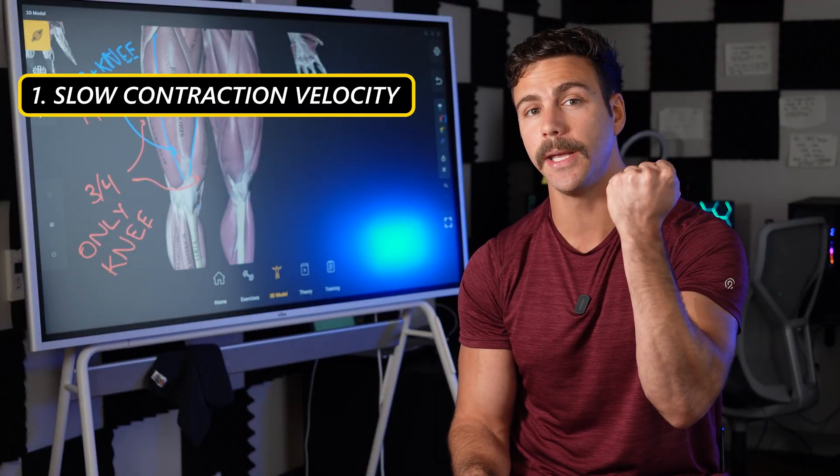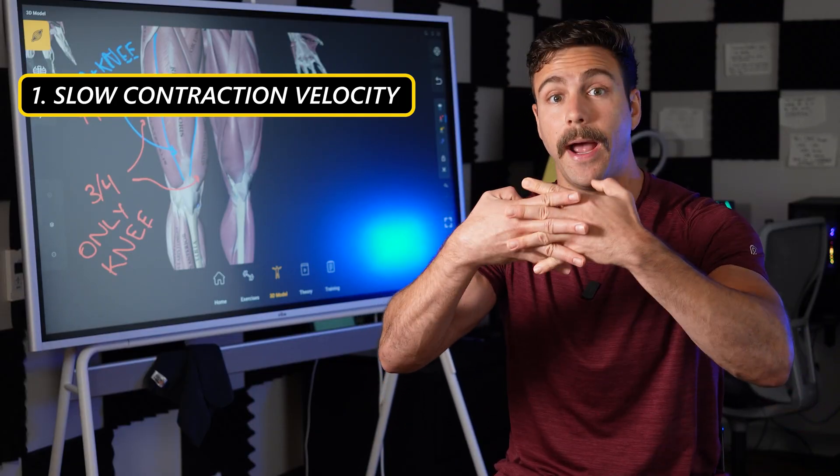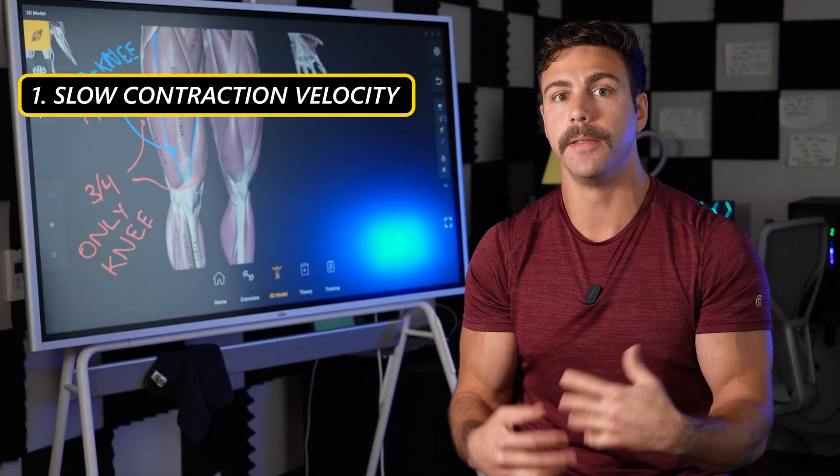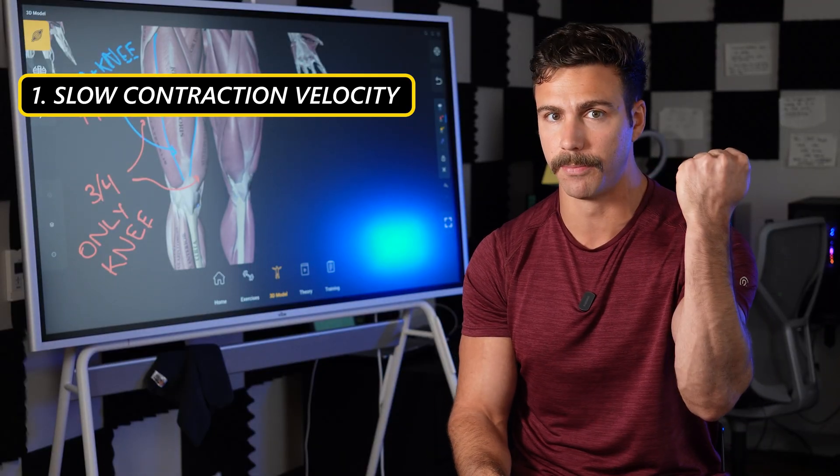From a physiological standpoint, these last five reps have two special things going on. First, we have a slowing of the contraction velocity, which is how fast the muscles are actually contracting. And this is important because of the force velocity relationship. So that's number one.